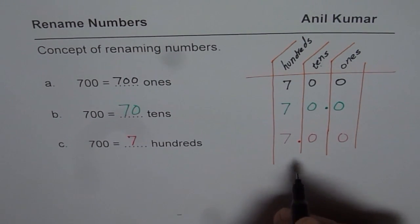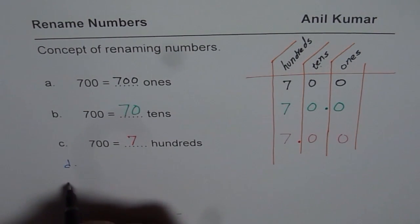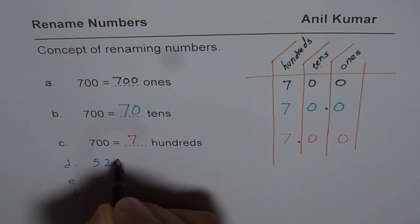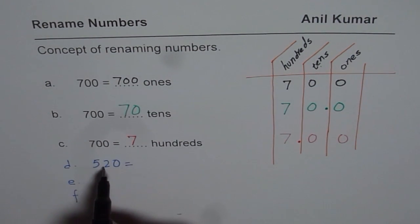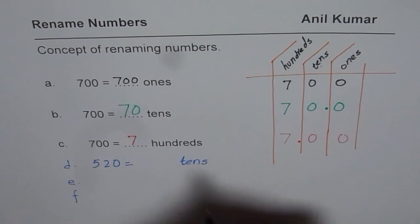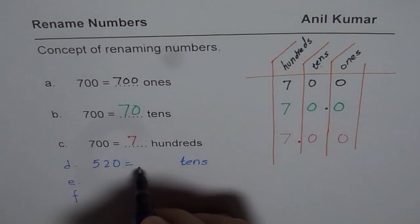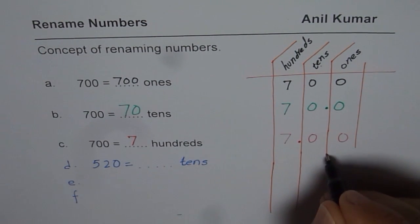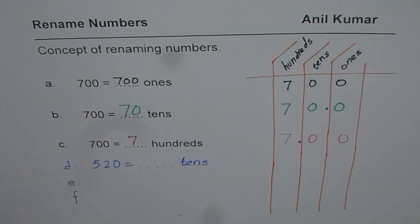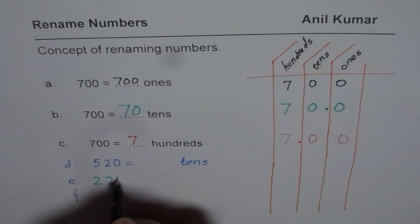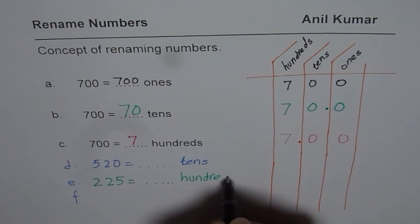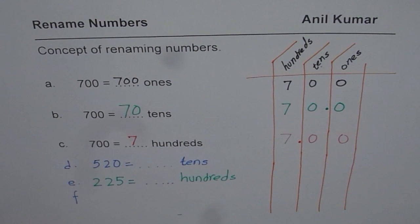Now let's get into some practice questions. This time let's take the number 520. I want you to write 520 as tens — how will you do it? Pause the video and answer. So 520 makes how many tens? You can make a place value chart as I have done to answer these questions. Now the next number is 225, and I want to write this as hundreds. Think about dollars and cents to get a good picture.